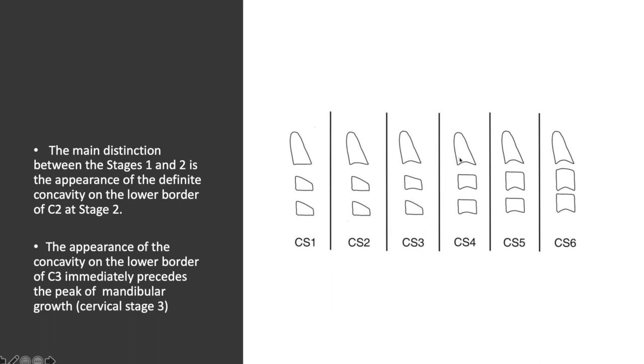Stage four: concavities on the lower border are present on all of the cervical spines we're looking at. The bodies of both C3 and C4 are rectangular horizontal. They have changed their shape from trapezoid to rectangular horizontal.